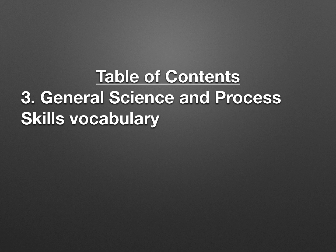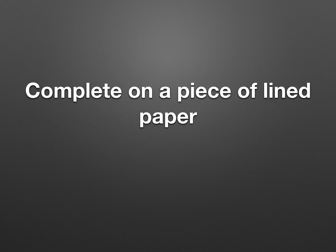Before we get started, turn to your table of contents. You're going to update it using number 3 — that's going to be general science and process skills vocabulary. We did numbers 1 and 2 together in class, now we're at number 3. Your table of contents should include this now. For this set of flip notes, all you will need is a piece of lined paper. Take out a piece of lined paper.